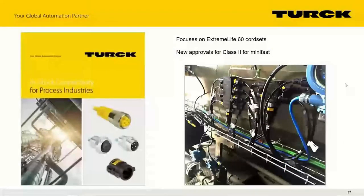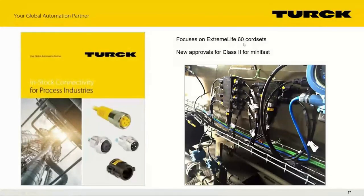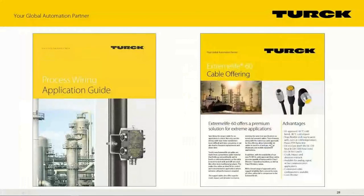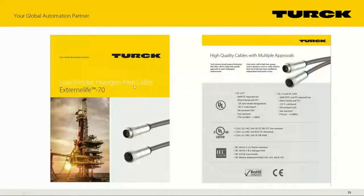We have an in-stock program for process cords, stocked in Minneapolis and Detroit/Michigan. It focuses on our minus 60°C cables in the Mini Fast 2 line. We also now have Class 2 approval for our Mini Fast line, so we can now help those dealing with dusts and grains — previously you could only do intrinsic safety there, but now we can do Class 2 Division 2 with our Mini Fast line. We also now have hazardous-area UL approval on our Mini Fast receptacles for panels.